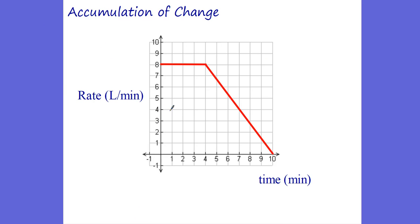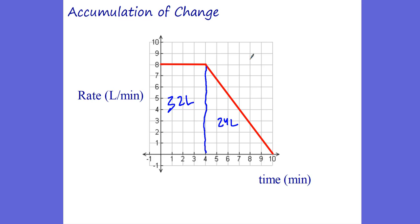Now look at what happens when we have something like this — the rate begins to decrease. We've begun to negatively accelerate. We want to find the liters, so we take the area. We know the area for the constant portion is 32 liters. The area of the decreasing portion is a triangle: one half times base of 6 equals 3, and 3 times 8 is 24 liters. That gives a total volume of 32 plus 24, which is 56 liters.